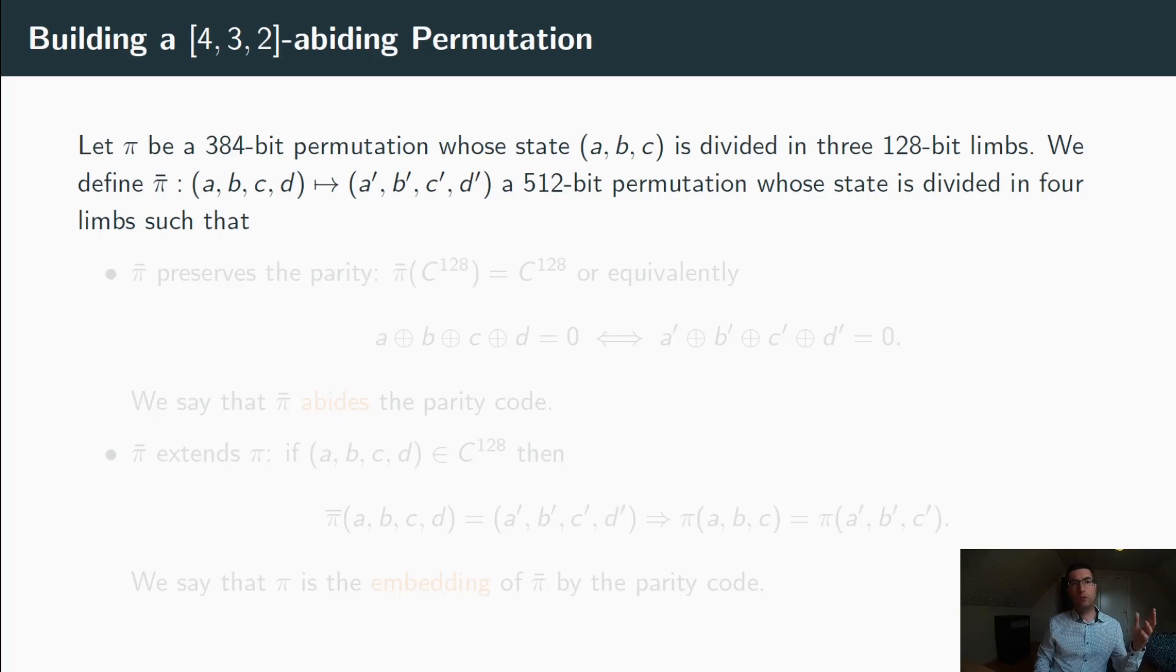Now, how do we use the parity code in order to build a fault-detecting permutation? Well, let's imagine that we have pi, a 384-bit permutation. Then its state can be divided into three 128-bit blocks that we will call limbs, ABC. We can then, by adding one extra limb, extend pi into pi bar, a 512-bit permutation that satisfies two different properties.